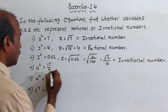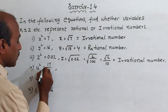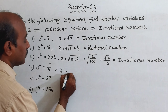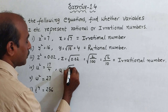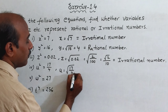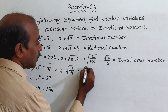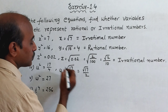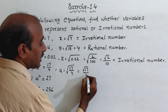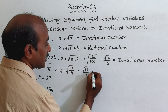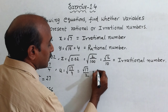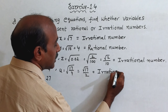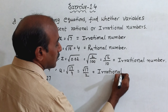Next one: u squared is equal to 17 by 4, so u is equal to under root of 17 by 4. This equals root 17 by 2, because root 4 is 2. Root 17 is irrational, and irrational divided by rational is irrational — so this is an irrational number.